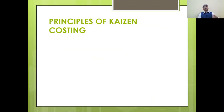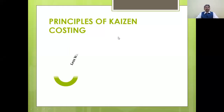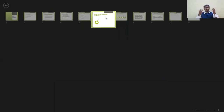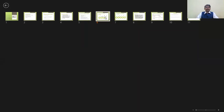Next, we look at the principles of Kaizen costing. The first principle is less wastage. Our focus is on reducing wastages because when material, time, or efforts are wasted in an organization, that causes high cost. We must reduce wastages — this is the first principle of Kaizen — to achieve continuous improvement by reducing and controlling costs.